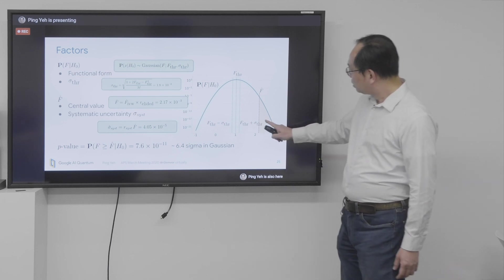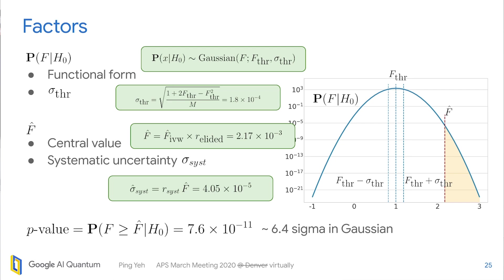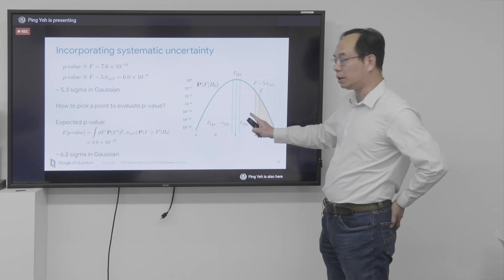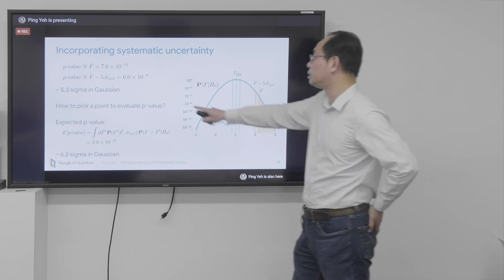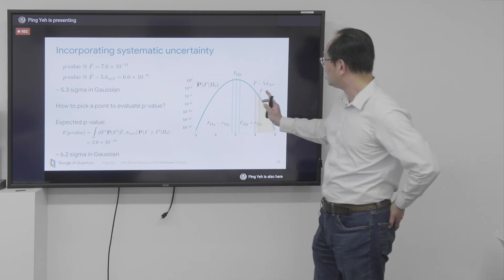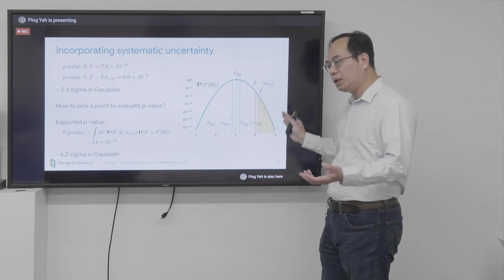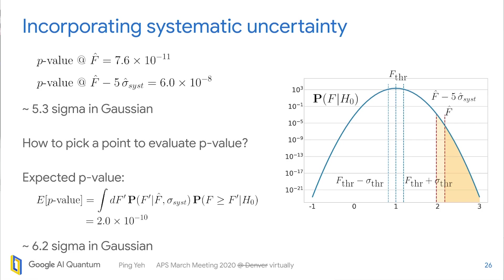And then, this is one F hat. We do have a systematic uncertainty here. So how do we deal with that? So the way we deal with it is that we can try, for example, we subtract by 5 sigma and see what's the p-value here. Of course, p-value is higher because you're integrating with more area. But then, there are an infinite number of possible choices of the value for checking the p-value. So how do we do that?